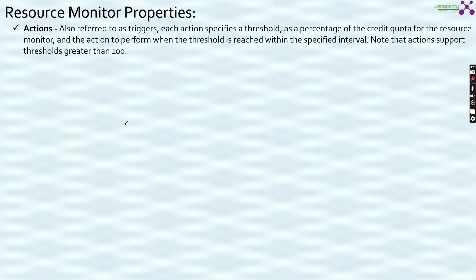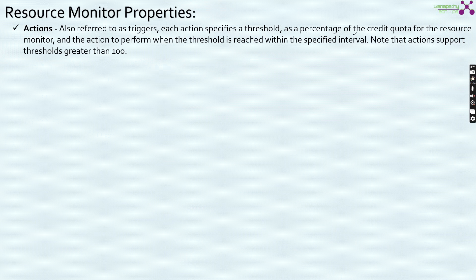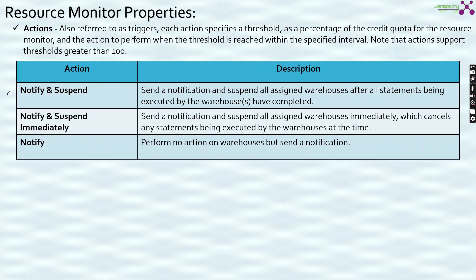Moving on to the fourth important property: actions. Actions are the ones using which we can trigger specific things — such as sending a notification or suspending a warehouse. Actions are also referred to as triggers. Each action specifies a threshold as a percentage of the credit quota for the resource monitor and an action to perform when the threshold is reached within the specified interval. Note that action supports thresholds greater than 100. There are three important actions currently available within Snowflake.